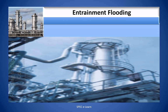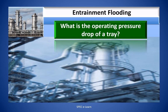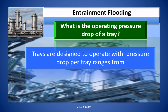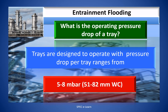Having seen the ultimate tray design pressure drop from the strength point of view and a typical pressure drop at the flooding point, the actual design pressure drop of an operating tray is in the range of 5 to 8 millibar per tray, which equals 51 to 82 mm of water column.